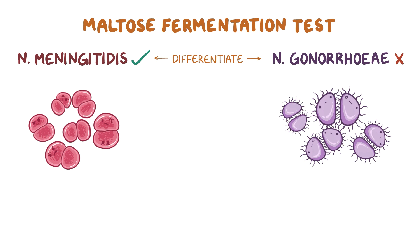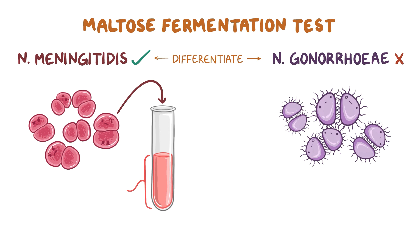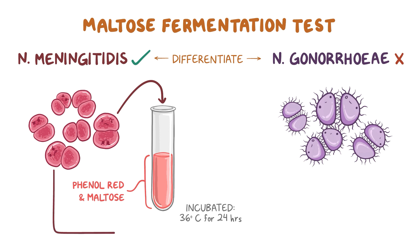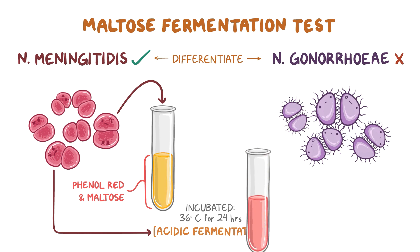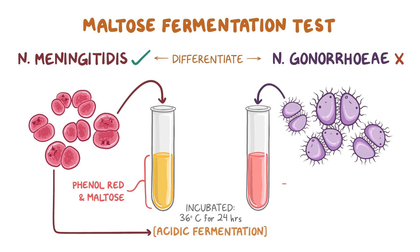To check for this, a pure sample from the culture is transferred to a sterile tube containing a mix of phenol red and maltose, which is then incubated at 36 degrees Celsius for 24 hours. N. meningitidis causes acidic fermentation of maltose, and the resulting byproducts make the solution turn yellow. With N. gonorrhoeae, the solution stays red.